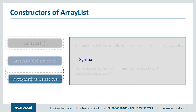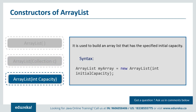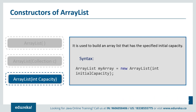The third constructor is ArrayList(int capacity). This is used to build an ArrayList that has a specified initial capacity. The initial capacity is the number of cells that the ArrayList starts with. It can expand beyond this capacity if you add more elements. Now let's see a small example to understand how and where these constructors are used in ArrayList.